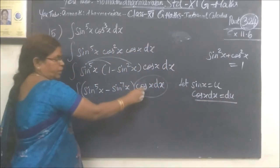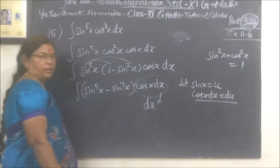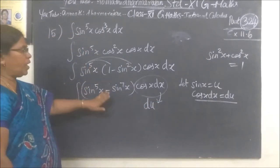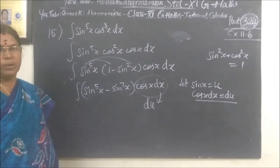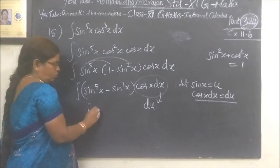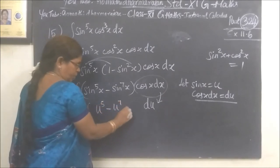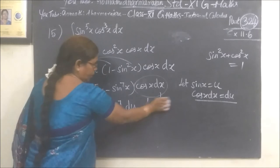If you want to make this work, it is equal to du. So u power 5 minus u power 7 du is equal to the integral.